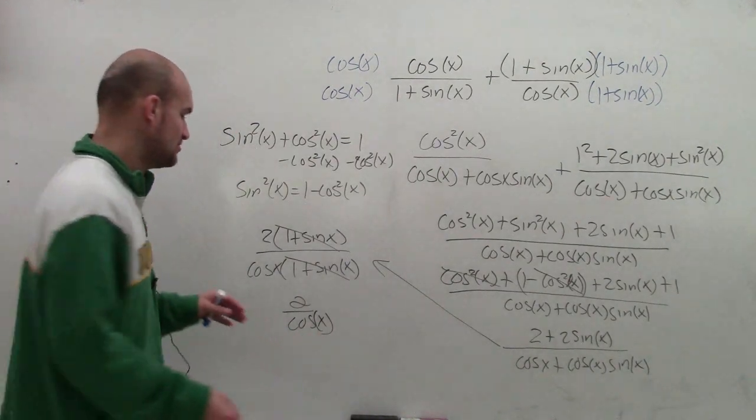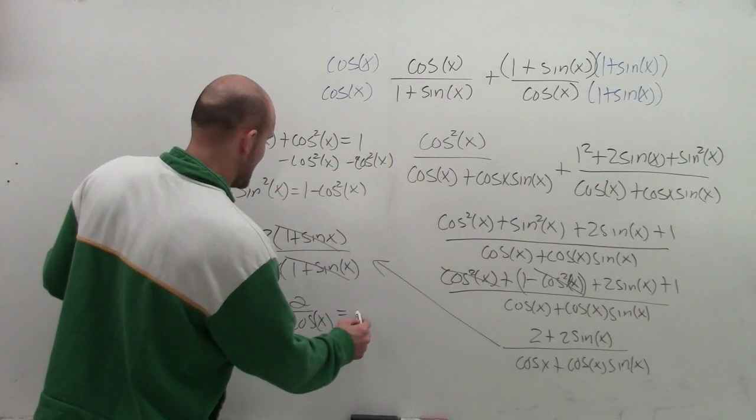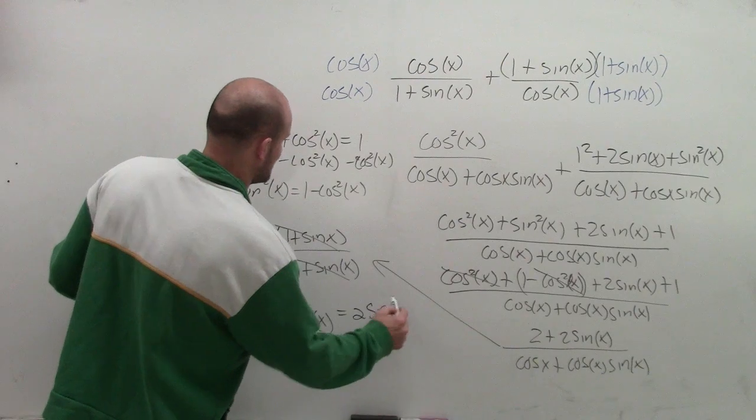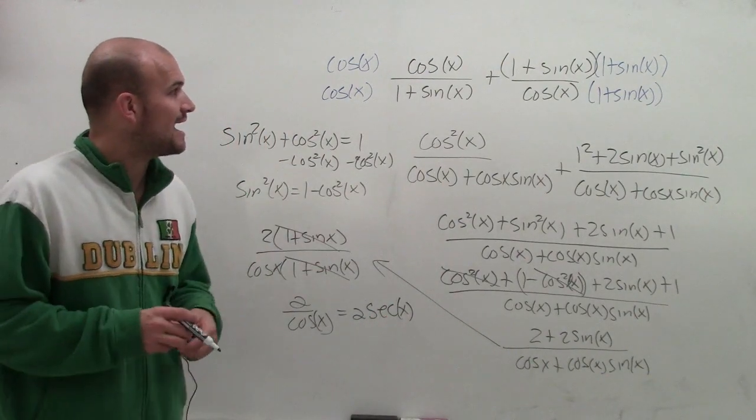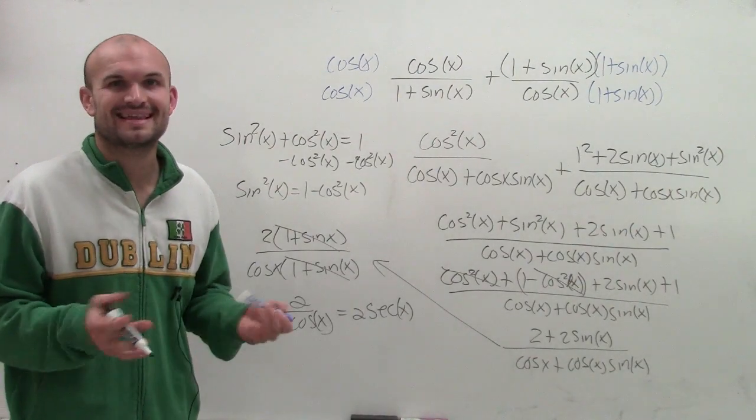Now, rewriting this as a non-fractional form, I could rewrite this as 2 secant of x. So there you go, ladies and gentlemen. That's how you simplify by adding two rational trigonometric terms. Thanks.